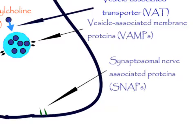The release site on the inner surface of the nerve terminal membrane contains synaptosomal nerve-associated proteins (SNAPs), which interact with VAMPs. VAMPs and SNAPs are collectively called fusion proteins.